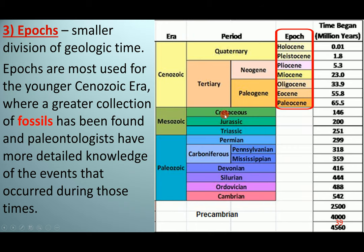An epoch is a smaller division of time, mostly used for the Cenozoic era. Because there are greater fossil remains from this time, we can break it up into different organisms more precisely. We have more fossil record for this time because the Cenozoic is our most recent era, so we can actually identify these organisms more clearly.